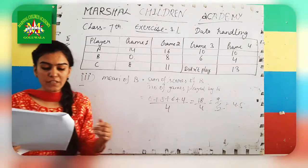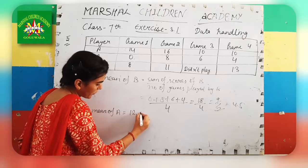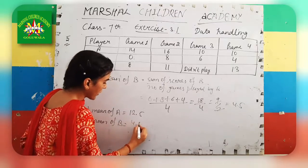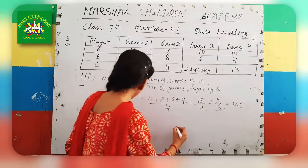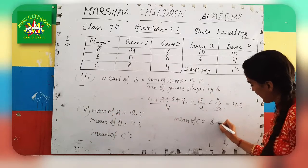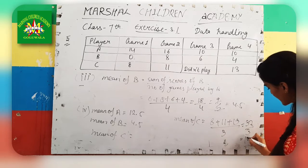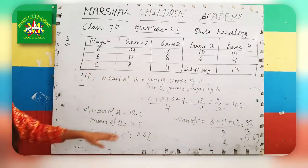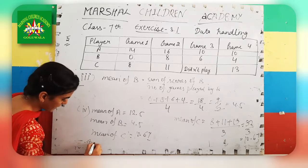The 4th question: who is the best performer? We have 3 players. The mean of B is 4.5, the mean of C is only 3, and A has the highest mean. Therefore, A is the best performer among all 3 players.